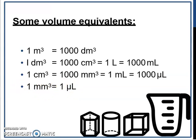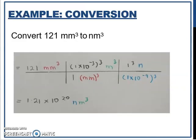Alright, so now we can do an exercise. Convert 121 millimeter cube to nanometer cube. So here you want to convert from meter to nano. Meter cube means to the power of 3 millimeter. As usual, 121 millimeter cube. So we put milliliter cube at the bottom.